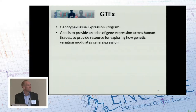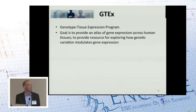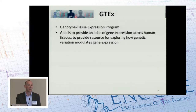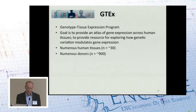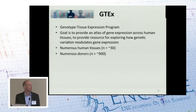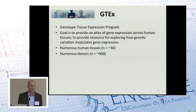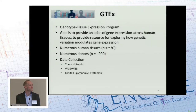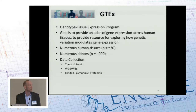Moving on now to talk about GTEx, the Genotype Tissue Expression Program. This is funded by the NIH Common Fund. The goal of GTEx is to provide an atlas of gene expression across human tissues and really to provide a resource for exploring how this gene expression is modulated by genetic variation. GTEx is looking at a pretty broad swath of human tissues — up to 30 — and looking at this within a large number of donors, up to 900 by the time the project is complete. They're collecting a number of data types: transcriptomic as well as whole genome sequencing and whole exome sequencing.